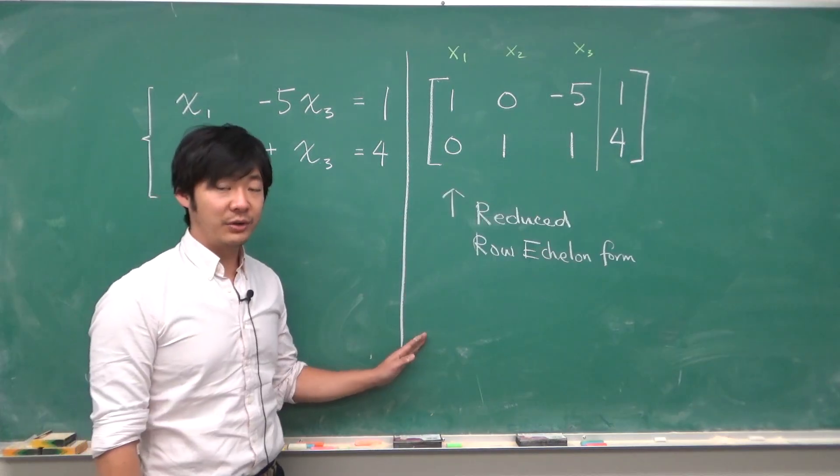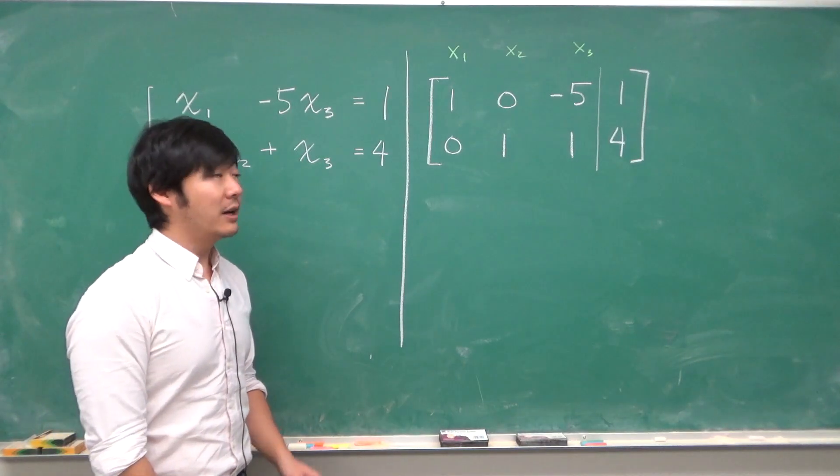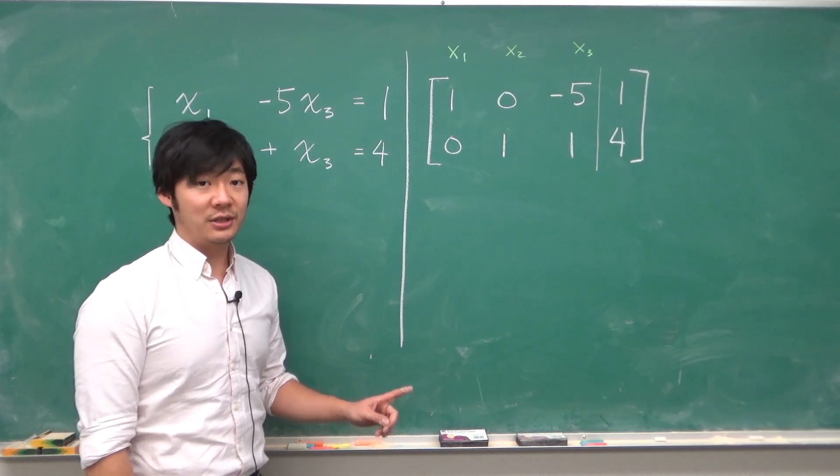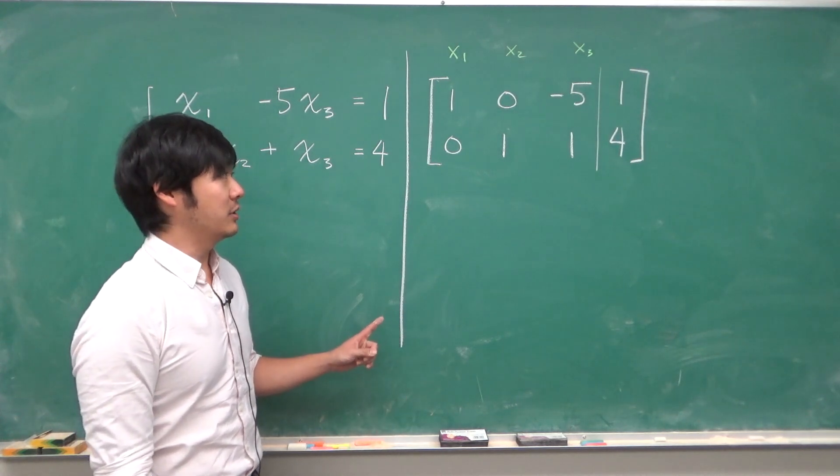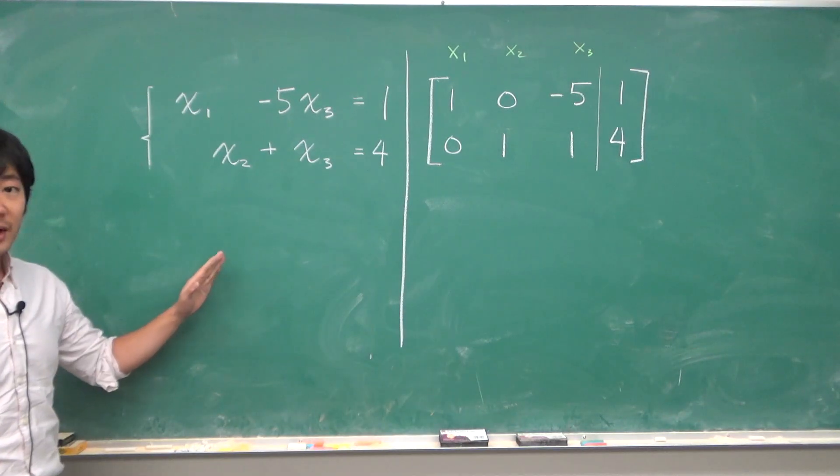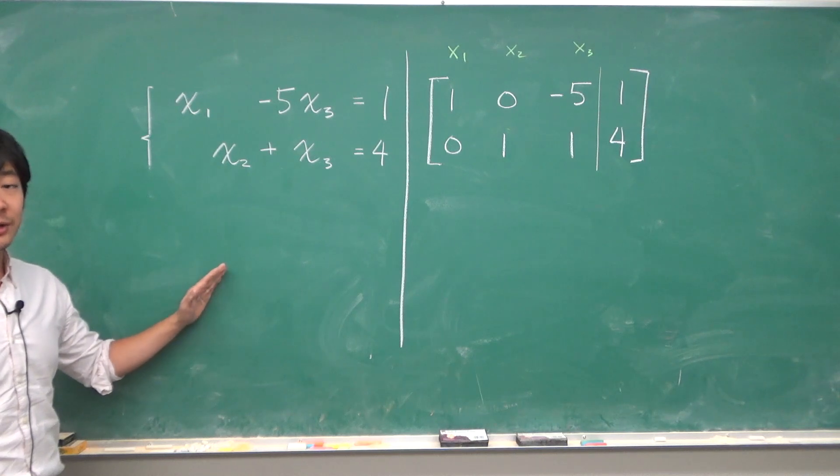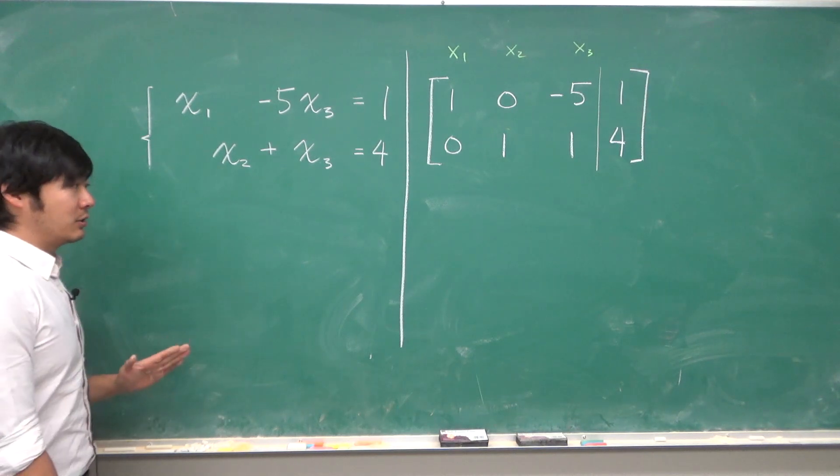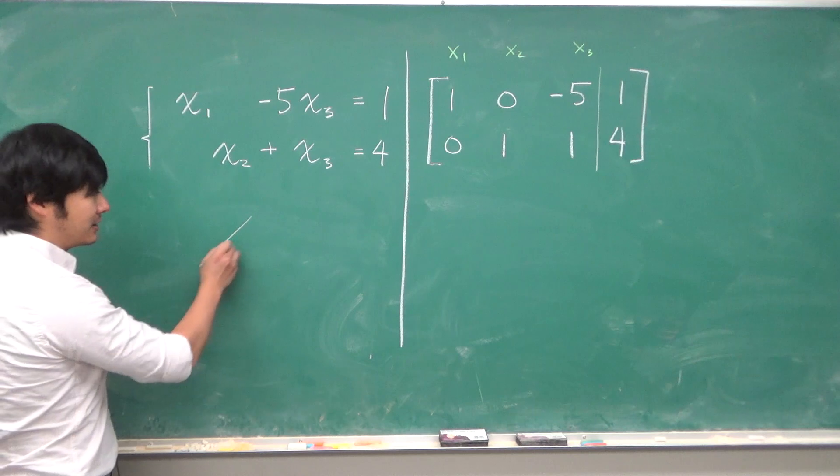How can we write down the set of solutions to this system of linear equations? This system has two equations and three unknowns, so geometrically we can think of this as two intersecting planes.